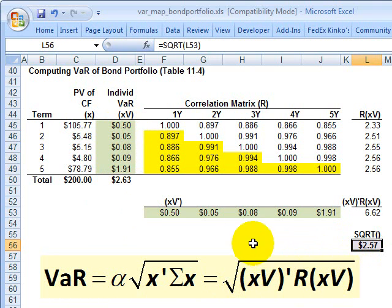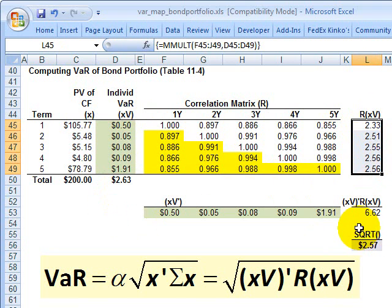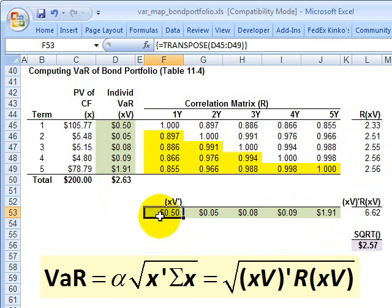And again, it's this function here, the product, which includes first the product of the correlation matrix and the vector of individual VaRs. And then we take that product, which is a column vector, and multiply it, or pre-multiply it, by the transposed individual VaRs. That's an illustration of table 11.4 in Jorion that gives us the diversified VaR of the bond portfolio.